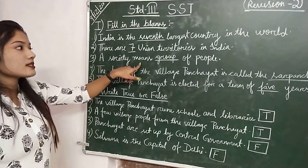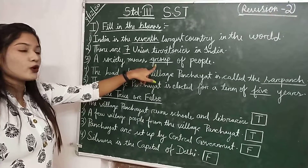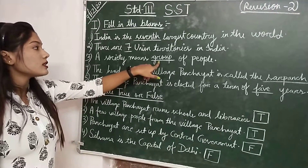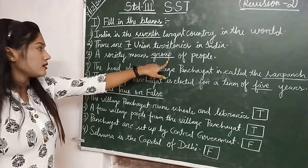Third number is: a society means __ of people. Answer: group of people, G-R-O-U-P.